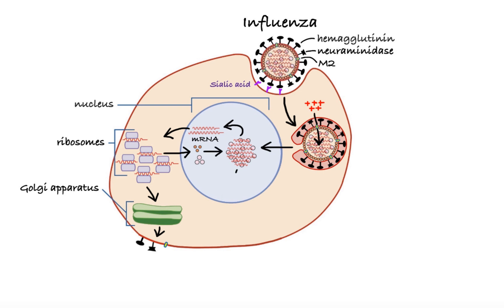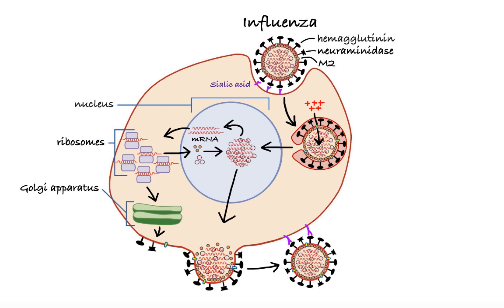Assembled viral capsid then moves to the plasma membrane, where it buds off, taking a segment of membrane containing the hemagglutinin and neuraminidase, thus forming a viral particle. In the last step of replication, viral neuraminidase enzyme cleaves and removes sialic acid receptors from the surface of the cell, thereby allowing release and spread of the virus to new cells.